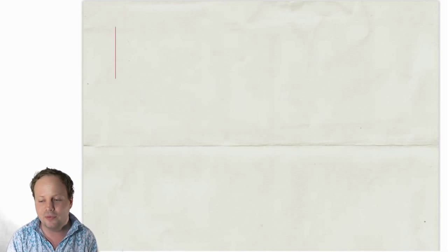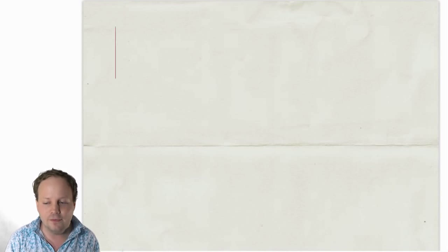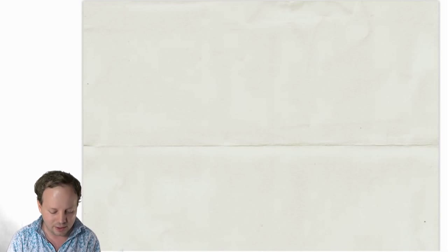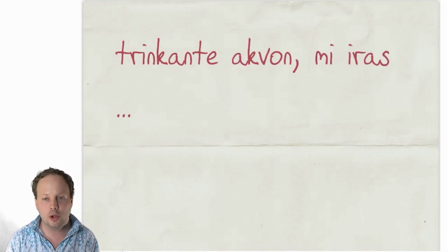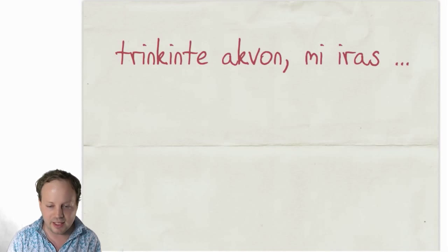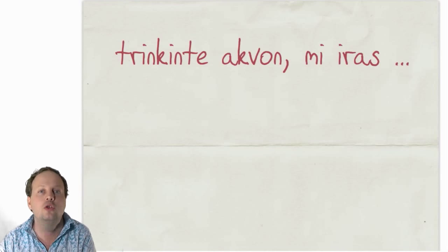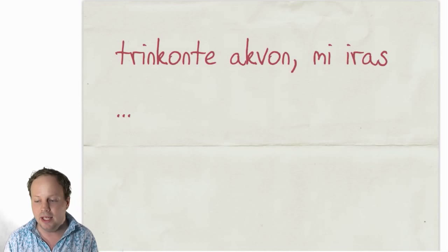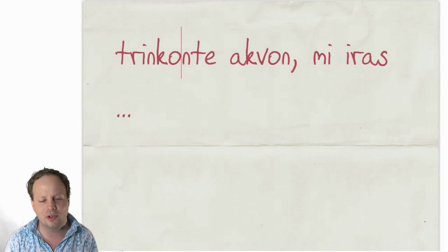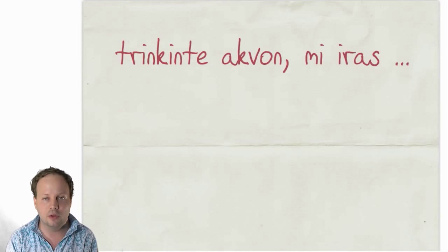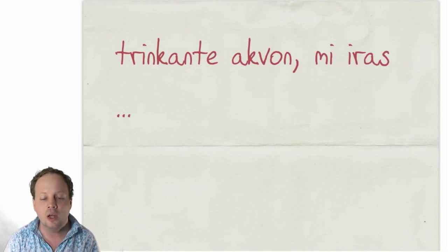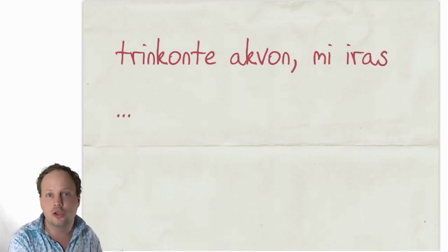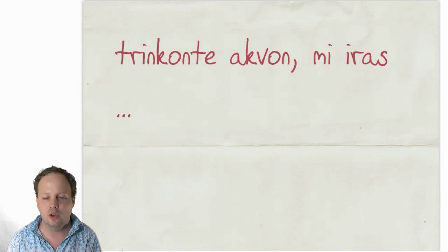Those are the most common forms of the active. You will also see it used as an adverb. For instance, TRINKANTE AKVON MI IRAS — that means 'drinking water, I go.' And TRINKINTE AKVON MI IRAS means 'having drunk water, I go.' TRINKINTE AKVON MI IRAS AL LA BUTIKO — 'having drunk some water, I go to the shop.' TRINKANTE AKVON MI IRAS AL LA BUTIKO means 'I'm drinking water while going to the shop.' TRINKONTA AKVON MI IRAS AL LA BUTIKO — 'going to drink water, I go to the shop,' so maybe I go to the shop to get water.